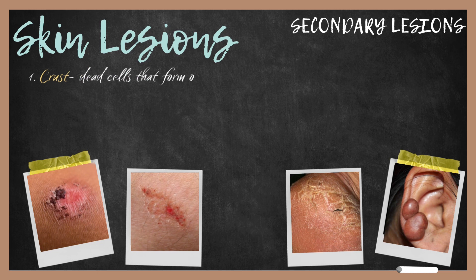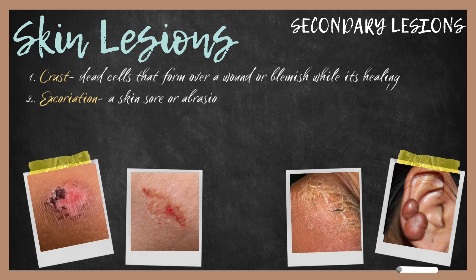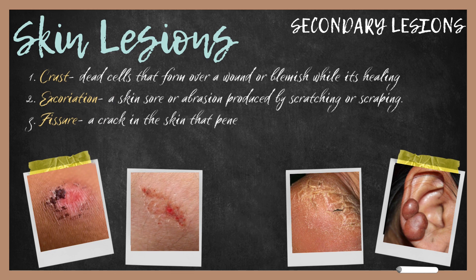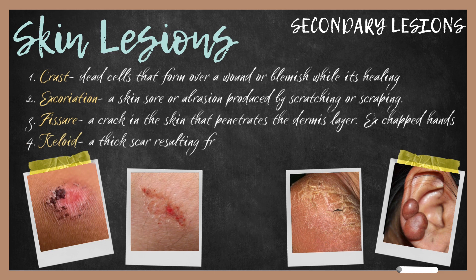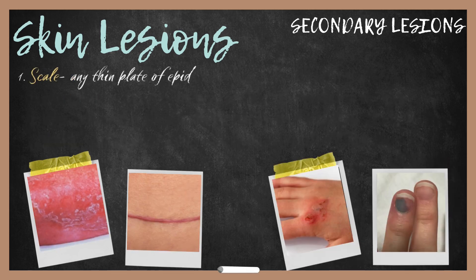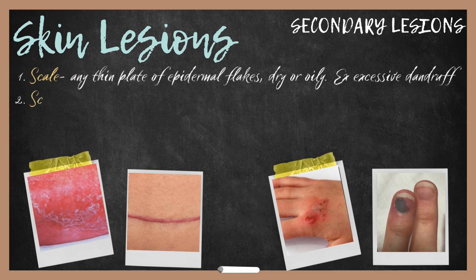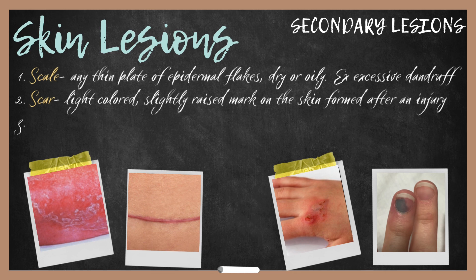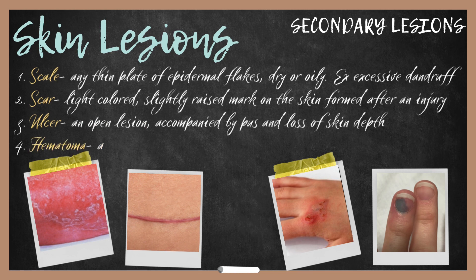Secondary lesions include: crust, which is dead cells that form over a wound or blemish while it's healing; excoriation, a skin scratch or abrasion caused by scratching or scraping; fissure, a crack in the skin that penetrates deep into the dermis layer, like chapped hands, lips, or feet; a keloid, which is a thick scar resulting from excessive growth of fibrous tissue; scales, which are thin plates of epidermal flakes, dry or oily, like excessive dandruff; a scar, which is a light-colored, slightly raised mark on the skin formed after an injury; an ulcer, which is an open lesion accompanied by pus or loss of skin depth; and a hematoma, which is a collection of blood trapped underneath the nail.